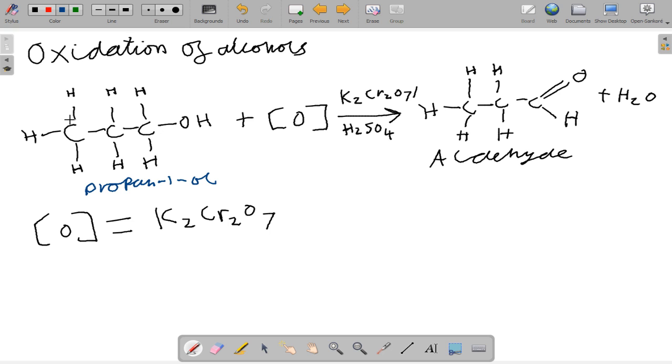I identified it as propan-1-ol by counting 3 carbons for prop (meth, eth, prop), and then looking for my OH group. It's on the first carbon, so you go 1, 2, and 3 there. The oxidizing agent is potassium dichromate and H2SO4.